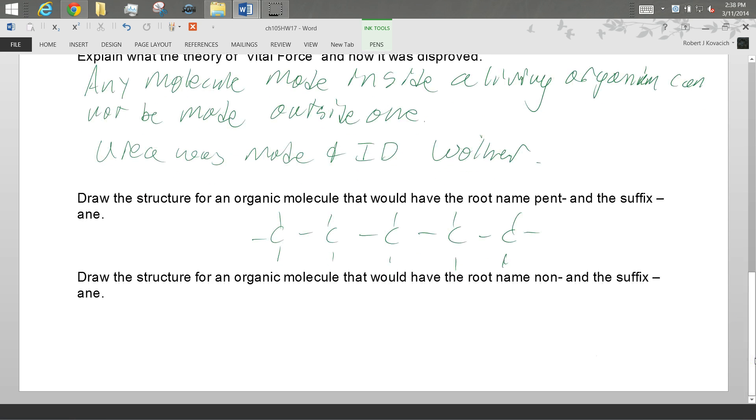And non and ane. So non means nine, so we need nine carbons, and pent means five, so we need five carbons. And then everything else that is there would be a hydrogen. Are we good with that? All right.